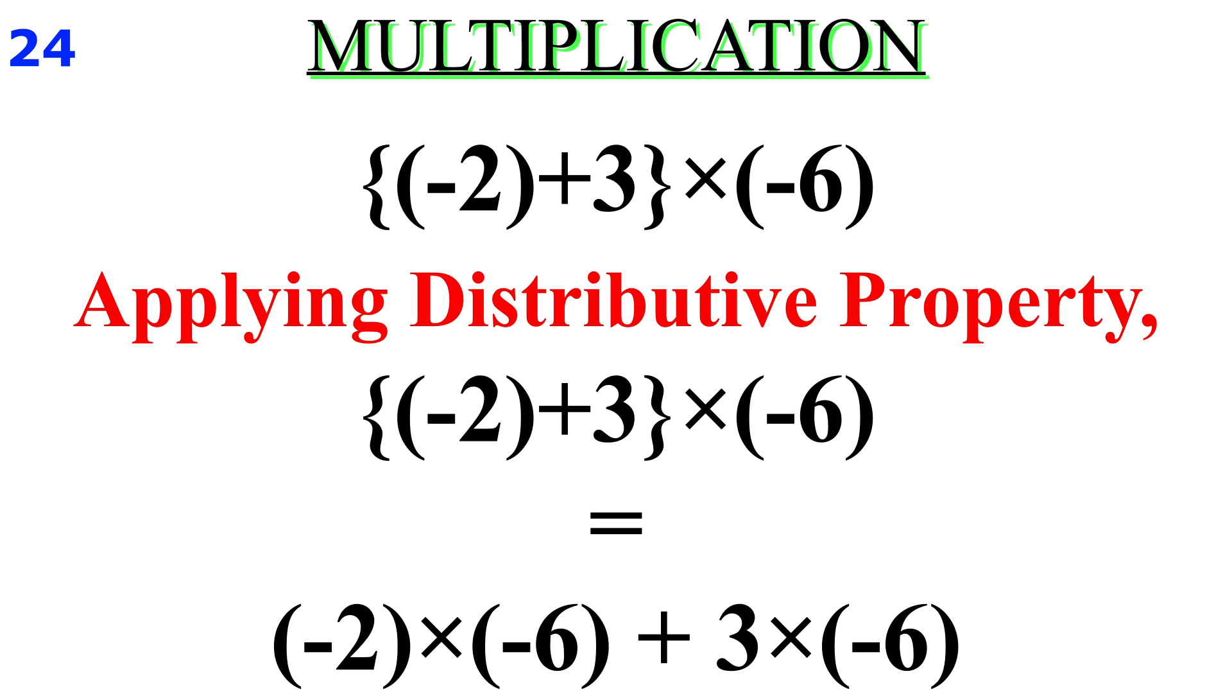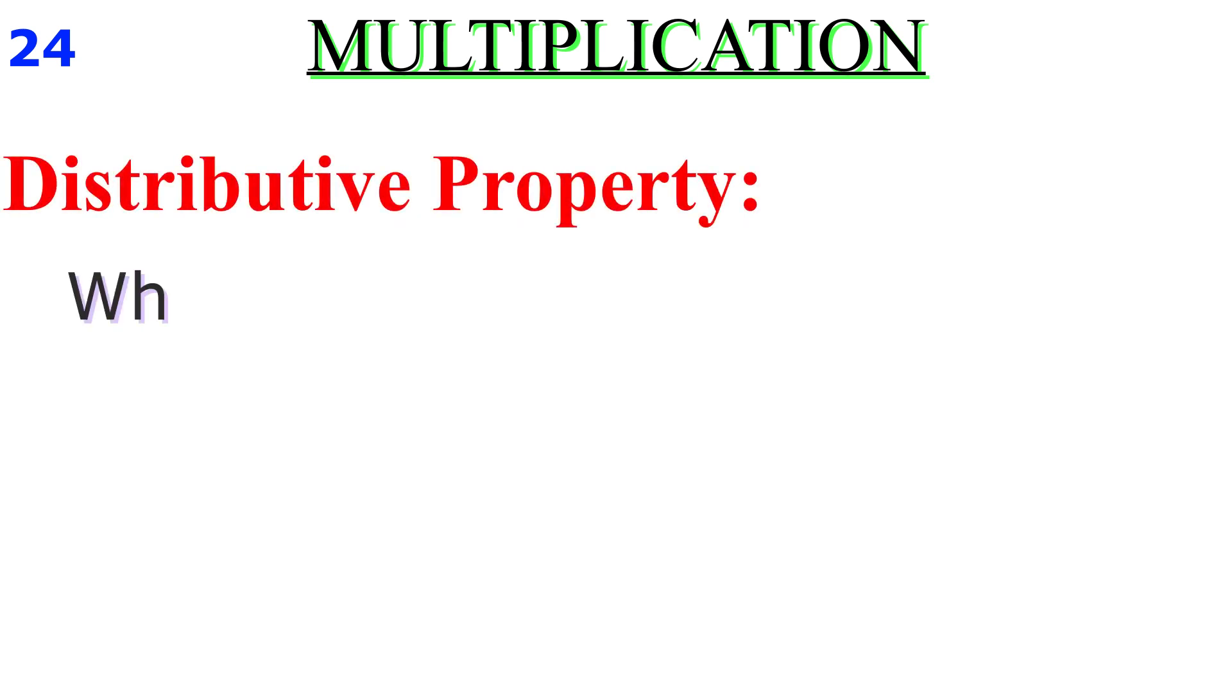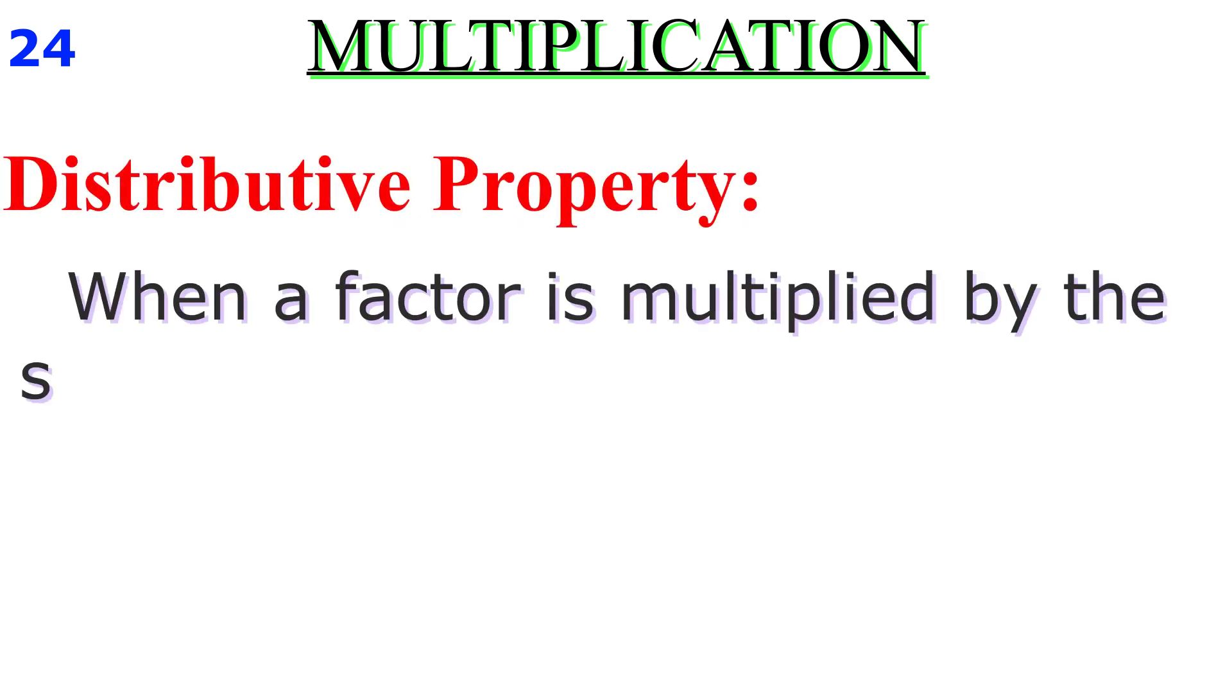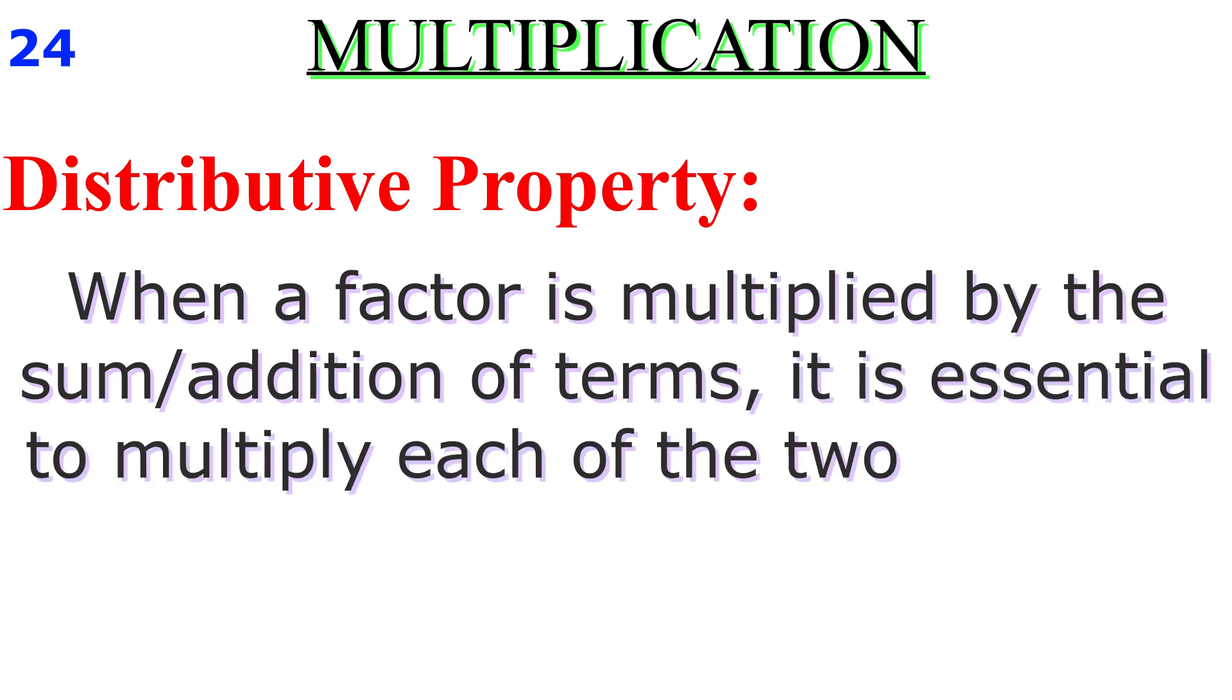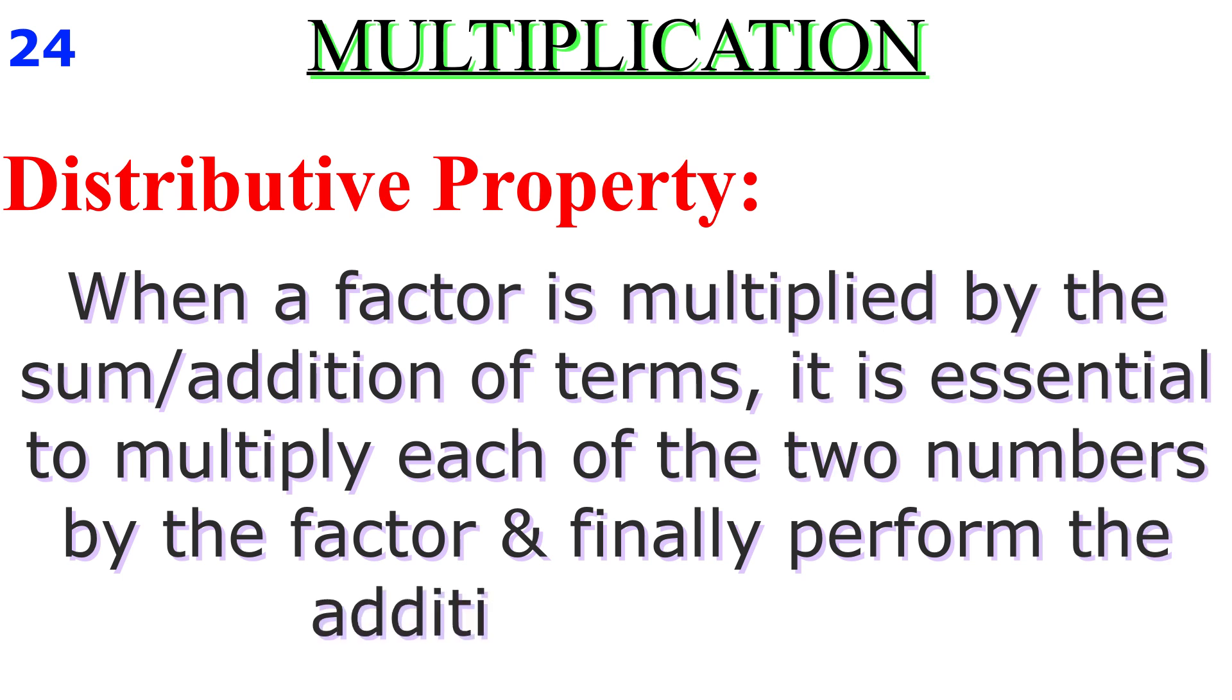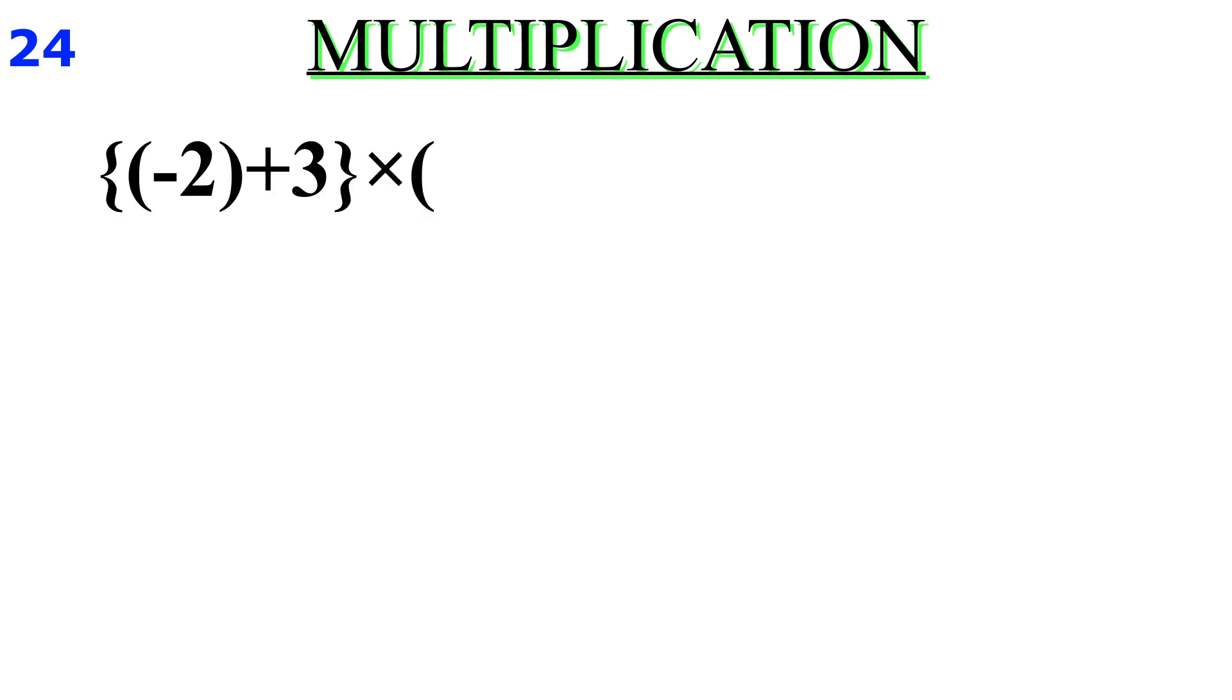What is distributive property? When a factor is multiplied by the sum or addition of two terms, it is essential to multiply each of the two numbers by the factor, and finally perform the addition operation.